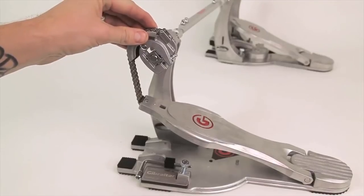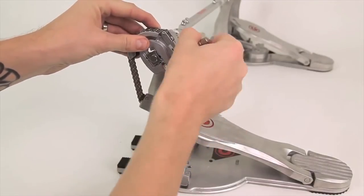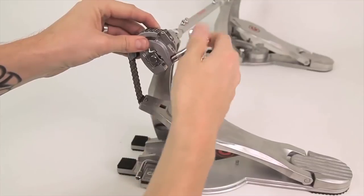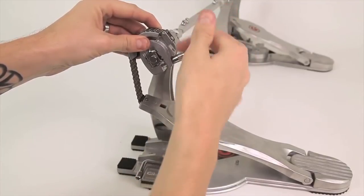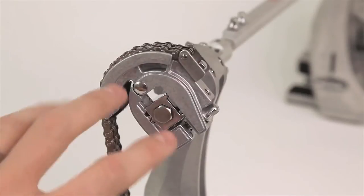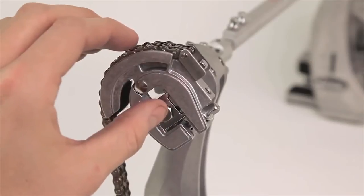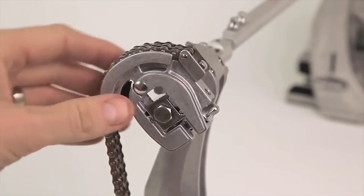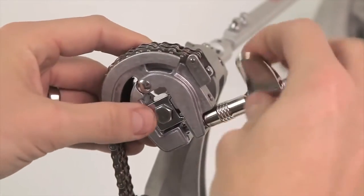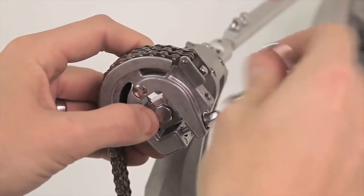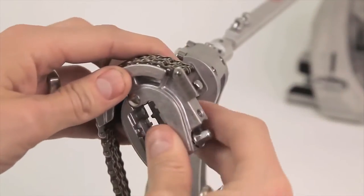It has a G-Drive dual adjustment cam. Now what this is, it's a two-point cam adjustment that alters resistance and motion to suit your playing style. So as you can see, the cam is in the forward positioning right now. It's got a space in the front of the cam and this is a more powerful positioning that's going to create more throw.